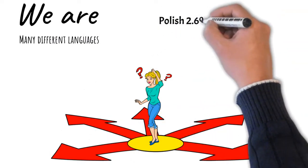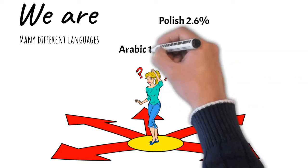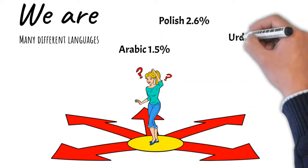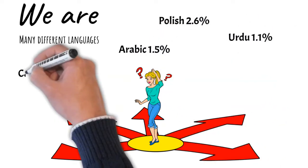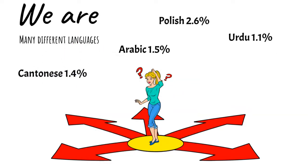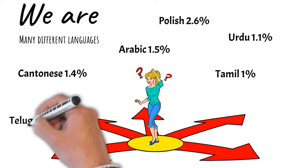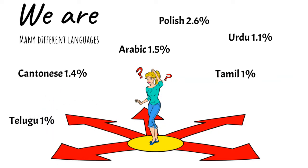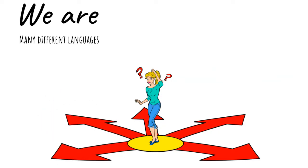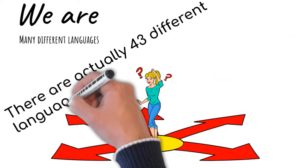This should be interesting as it means that 17.5% of young people do not have English as their home language. For young people at school, language can prove a barrier to learning but could also help us. Remarkably there are actually 43 different languages spoken within Craigmount.